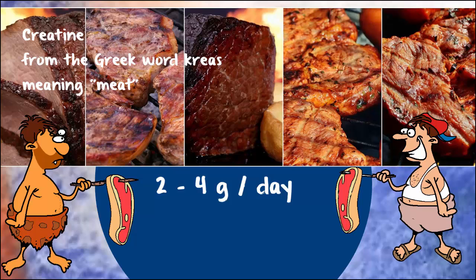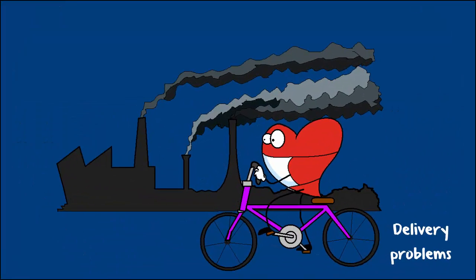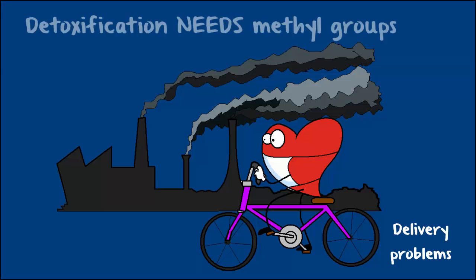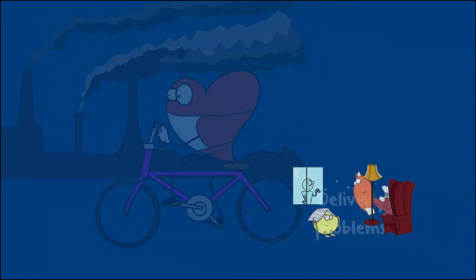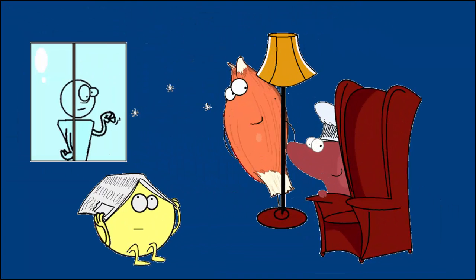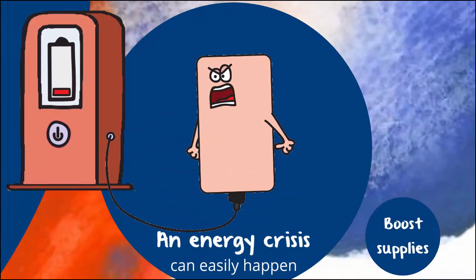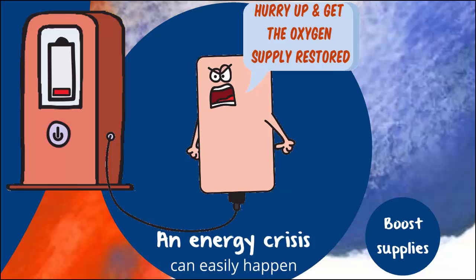The other problem with modern living is it's easy to be short of those methyl groups. Methyl groups are involved in lots of day-to-day body chemistry and also in many detoxification processes. We're increasingly living in a chemical world, and more chemical exposures necessitate more methyl groups. Combine this with delivery issues that go hand in hand with metabolic syndrome, and it's easy to end up with lower levels of phosphocreatine than ideal. This impacts cell energetics, especially in situations where oxygen levels are compromised — something that is also more likely when you are metabolically challenged.